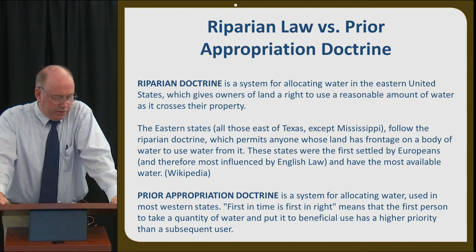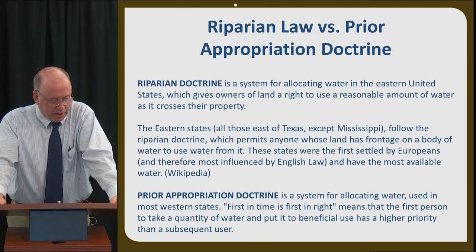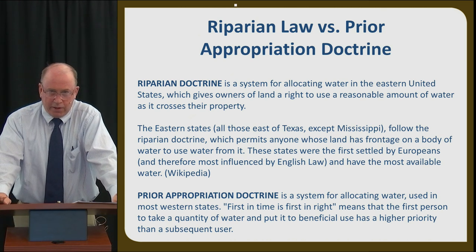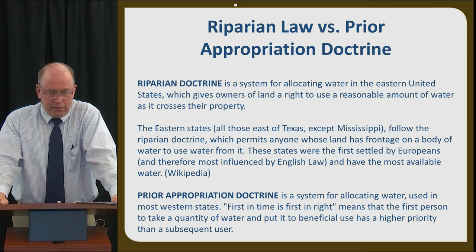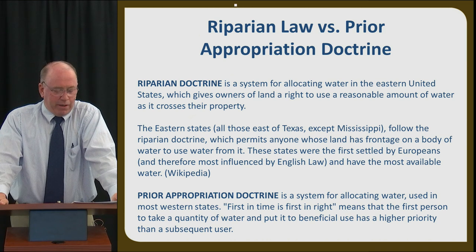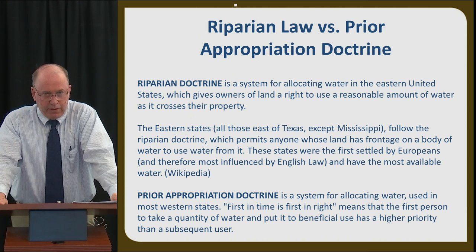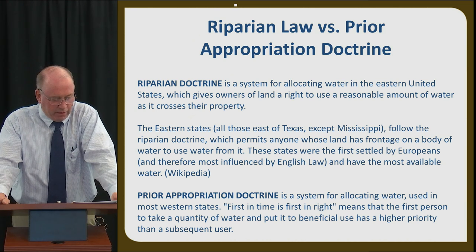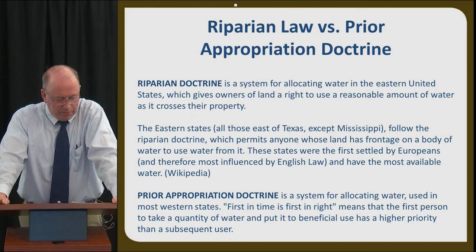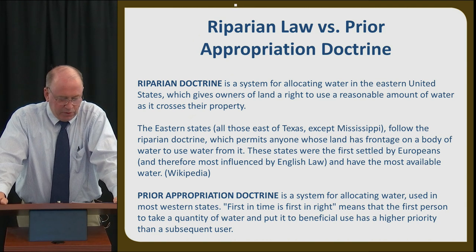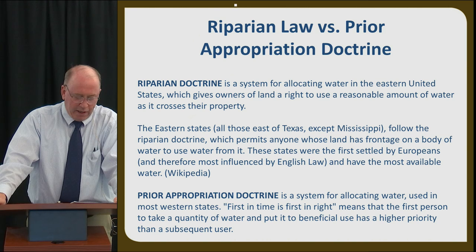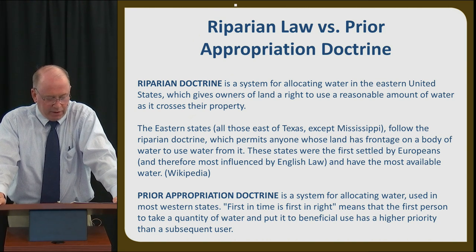I'd like to introduce riparian doctrine versus prior appropriation doctrine to give you an understanding of basic water law. Riparian doctrine is a system for allocating water that was used in the eastern United States, which gives owners of land a right to use a reasonable amount of water as it crosses their property. The eastern United States is generally wetter and had less need for water diversions. Harvey, in his master's thesis quoting Morton Horwitz, said it was obvious to the Utah settlers that the riparian doctrine of English common law — which gave water rights only to lands adjacent to streams — was not suited to farming, and it was promptly discarded.